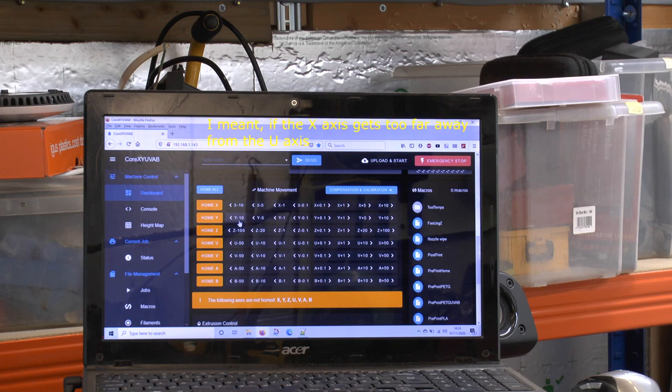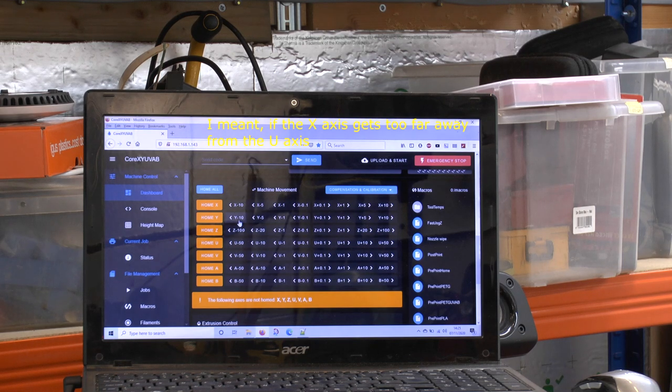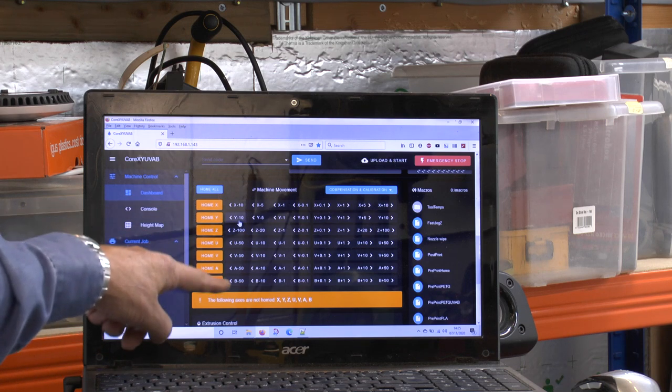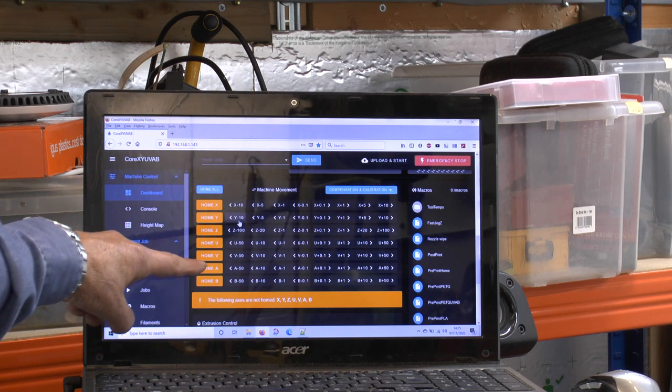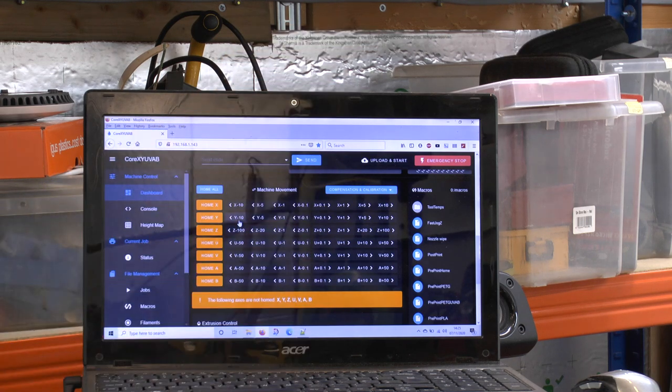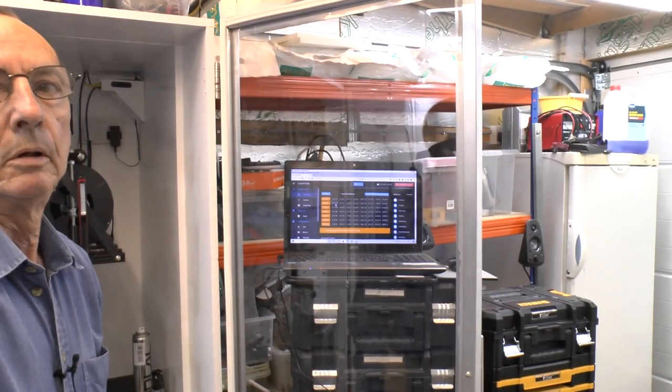If I was clever, I could hack the Duet web control so that these buttons would move all the axes together rather than individual axes. But I'm not clever enough to do that, so what I really want is some means of moving all the axes together. The other problem I've got is when I'm working on the machine with the door open, I've got to reach around the door to get at the computer.